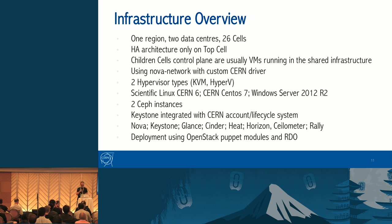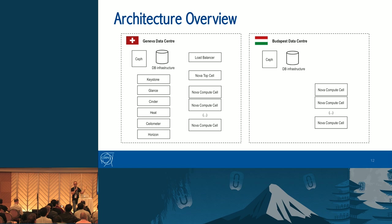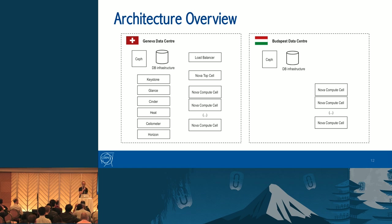Here is a representation of the CERN architecture. The big squares represent the two data centers. In Geneva we have Swift and the DB infrastructure, and we run all the OpenStack projects there — Keystone, Glance, Cinder, and so on — plus the load balancers, the Nova top cell, and a bunch of Nova compute cells. In Budapest we have Swift and the DB infrastructure, and we only run Nova compute cells there.